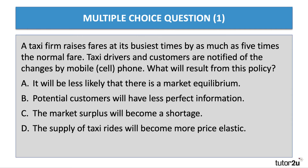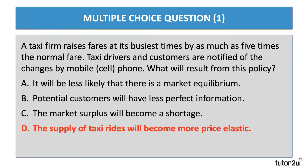Surge pricing — Uber is a good example of a company that uses surge pricing. When demand is increasing, the price of an Uber journey goes up. The correct answer is that supply will become more price elastic. As surge pricing kicks in, more taxi drivers will offer themselves to the market because they stand to make a better return per hour in their vehicle, so there'd be a more elastic price response on the supply side as surge pricing kicks in.